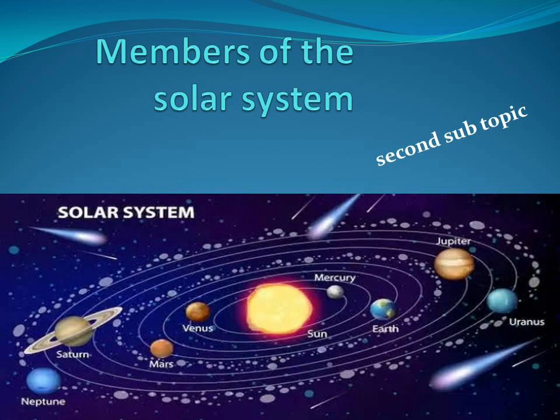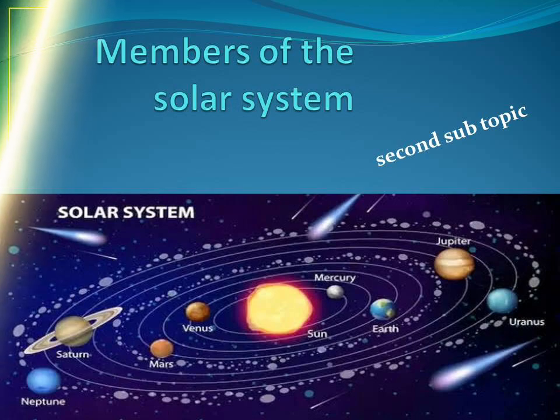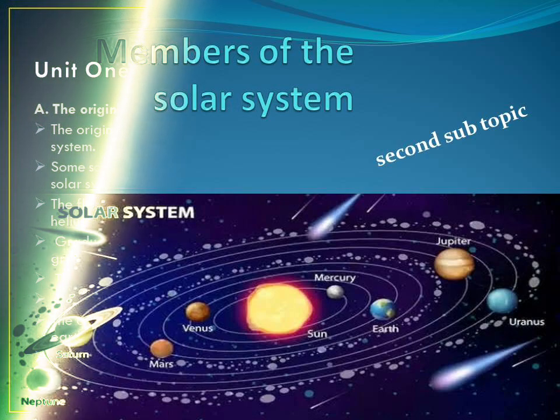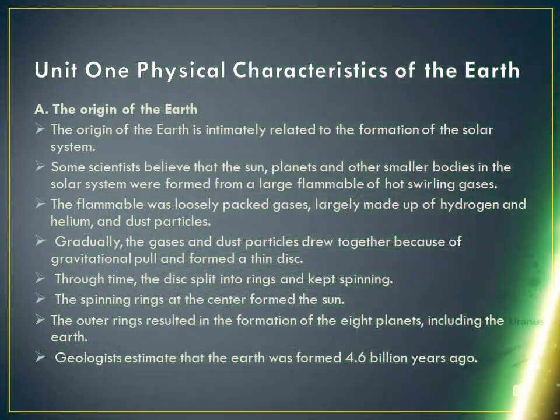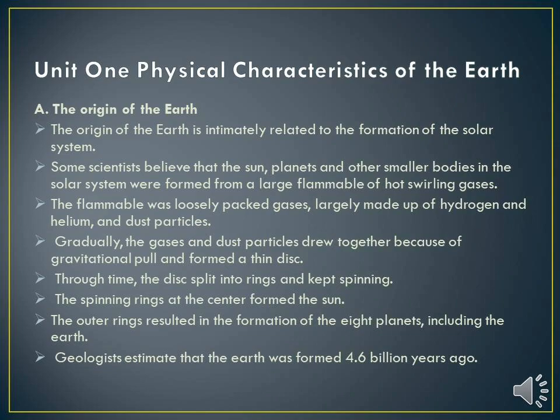Before I proceed into today's topic, let us revise the previous subtopic which is related to the origin of the earth. The origin of the earth is intimately related to the formation of the solar system. Some scientists believed that the planets and other smaller bodies in the solar system were formed from a large flammable of hot-swirling gases.